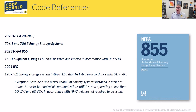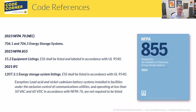Let's talk about the codes where we see this. UL 9540 shows up in NFPA 70, the National Electrical Code, in Article 706 — specifically in the informational notes at 706.1, which is the scope of energy storage systems. It's an informational note, so it's pointing to listings that apply to ESS systems. And 706.5 actually says energy storage systems shall be listed.